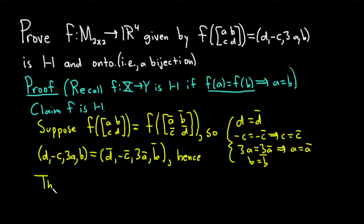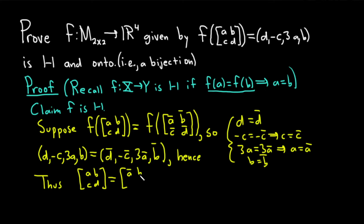Every entry in these matrices is equal, so the matrix [a, b, c, d] equals the matrix [ā, b̄, c̄, d̄]. Therefore f is 1 to 1, and the injective part is done.